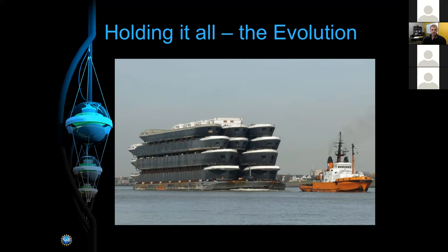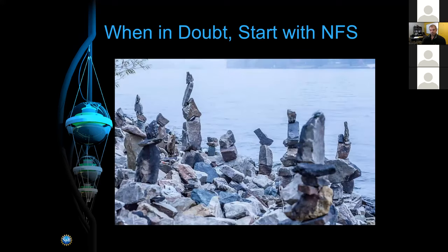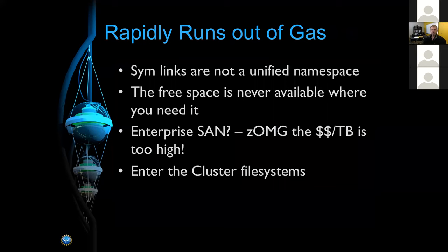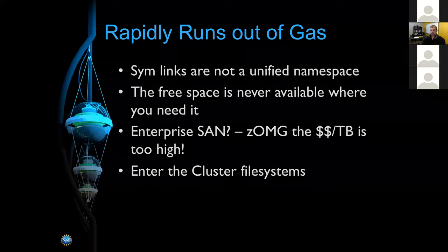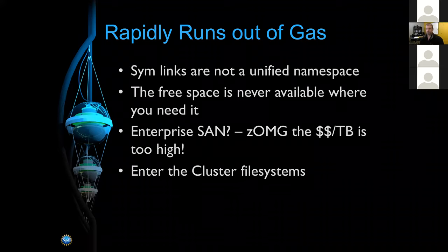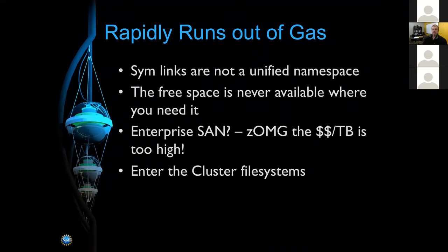The storage systems to hold all of this have evolved over time. In the beginning we did what everybody does — NFS servers. Data volumes were small, just a few dozen terabytes in 2005, so with half a dozen NFS servers you could hold that. But it doesn't take long before you run into problems: you never have storage where you need it, so you end up playing games of adding the next server and doing lots of manual rebalancing. Enterprise SANs like EMC could handle it, but the cost is enormous.